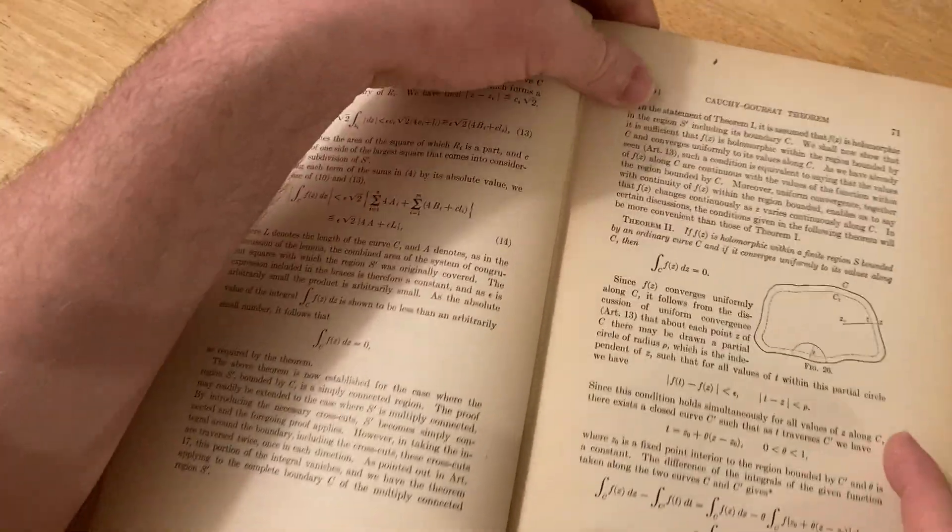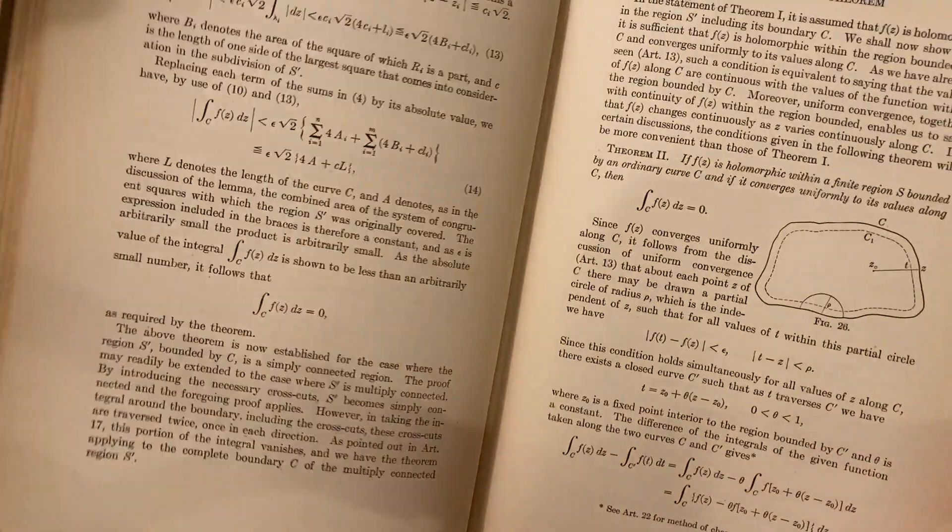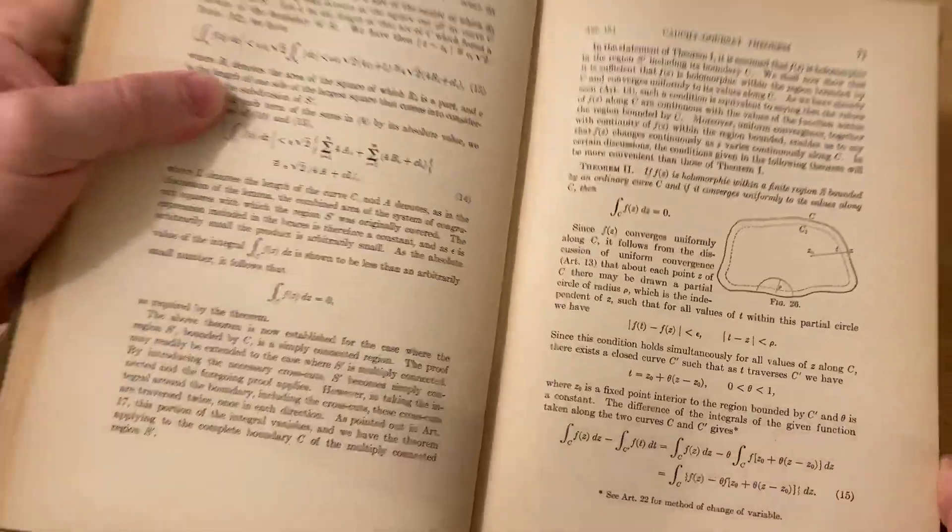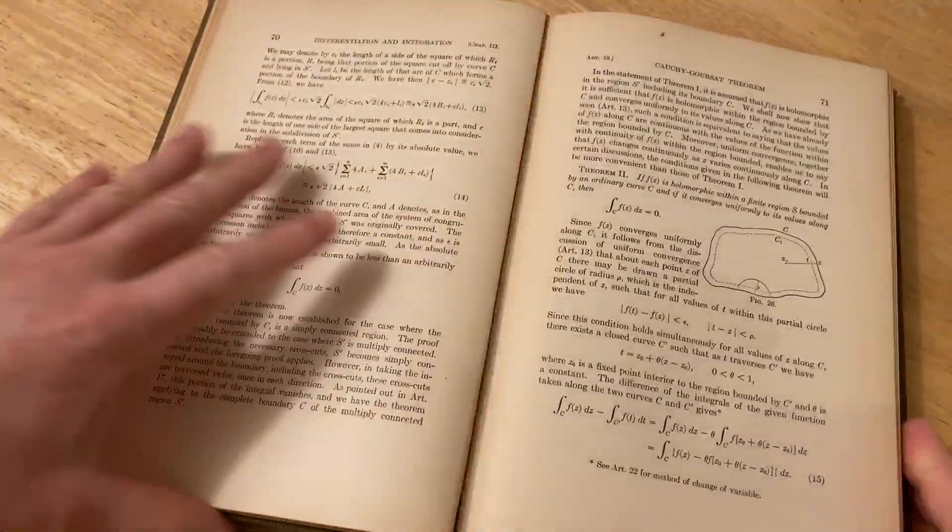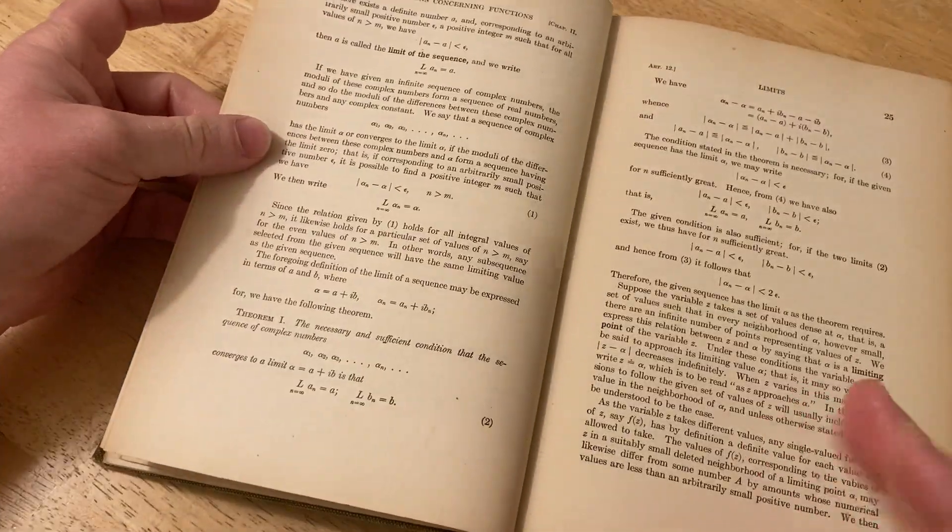Here's the Cauchy-Gorsant theorem. Theorem 2. Yeah, so it's basic complex variable stuff that you would see at the undergraduate level. But again, the book is really written at a higher level.